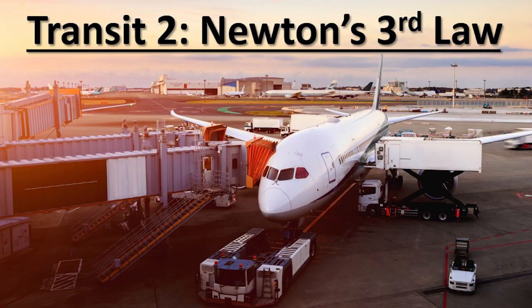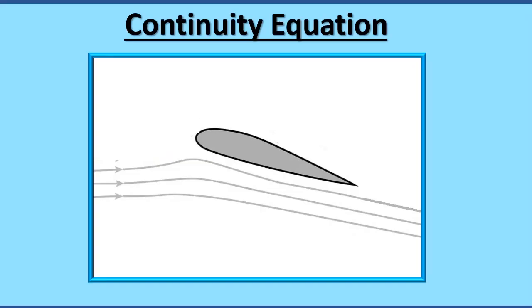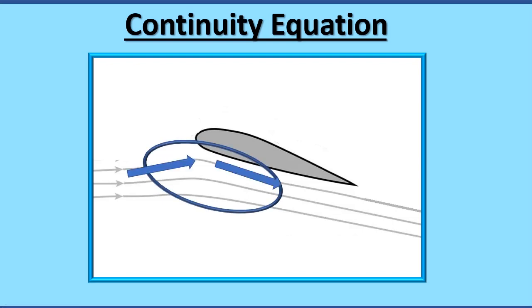Which brings us to the second transit of today's flight. Newton's third law states: every action has an equal and opposite reaction. When the wind strikes the bottom surface of a wing that is pitched upwards, this wind is deflected downwards. Thus, an equal and opposite reaction force must be created upwards on the wing, which causes the airplane to fly.